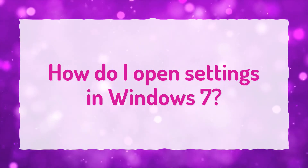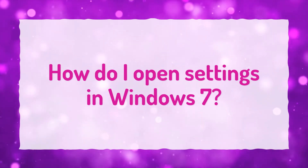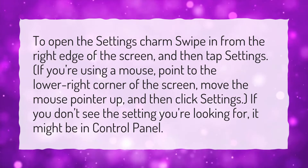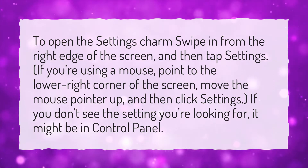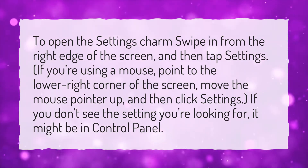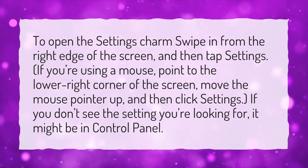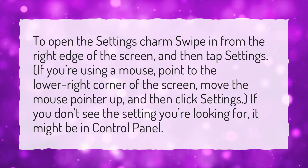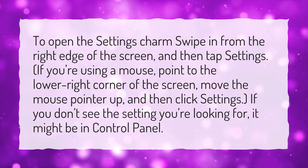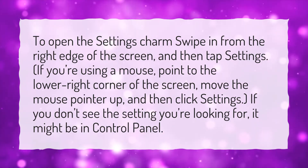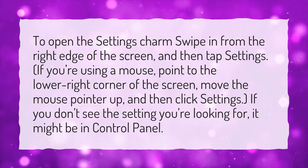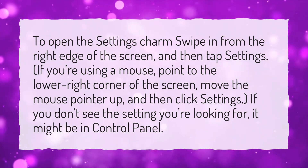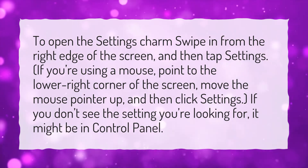How do I open settings in Windows 7? To open the settings charm, swipe in from the right edge of the screen and then tap Settings. If you're using a mouse, point to the lower right corner of the screen, move the mouse pointer up, and then click Settings. If you don't see the setting you're looking for, it might be in Control Panel.